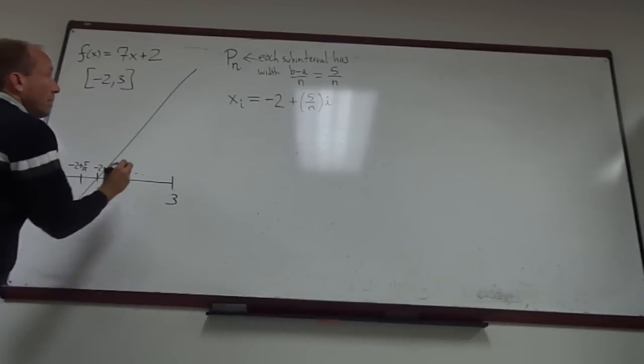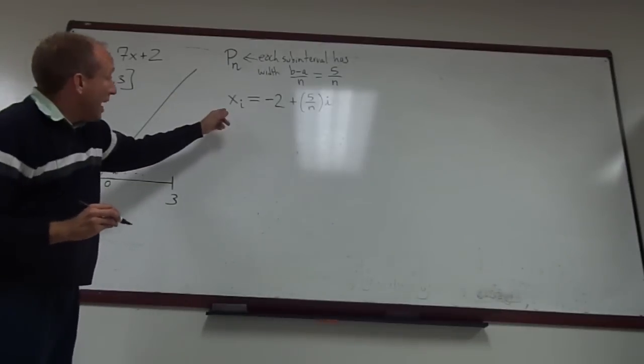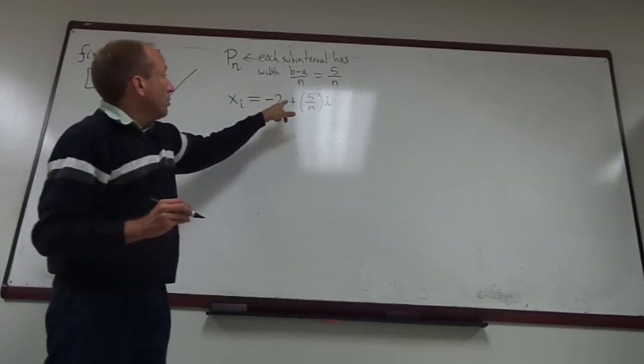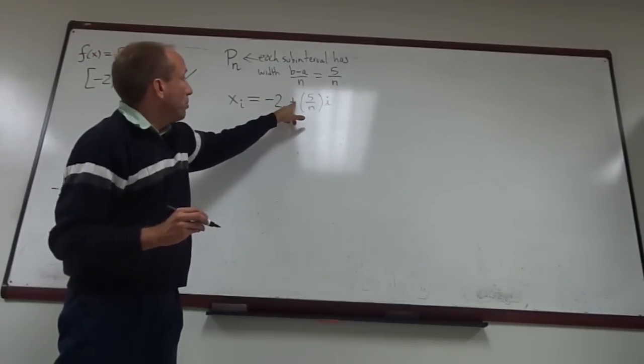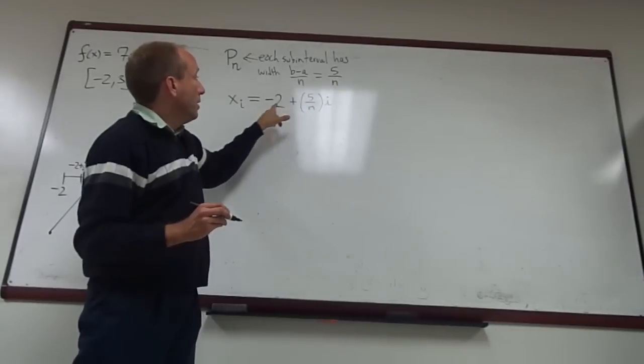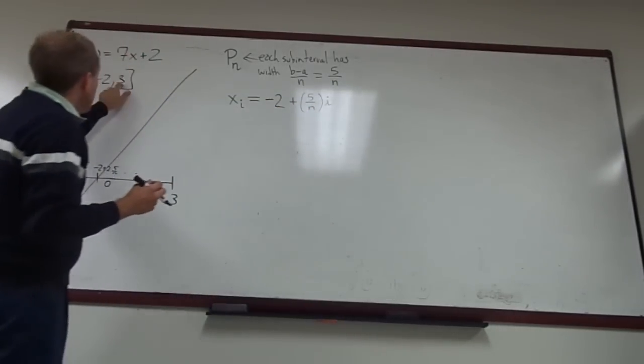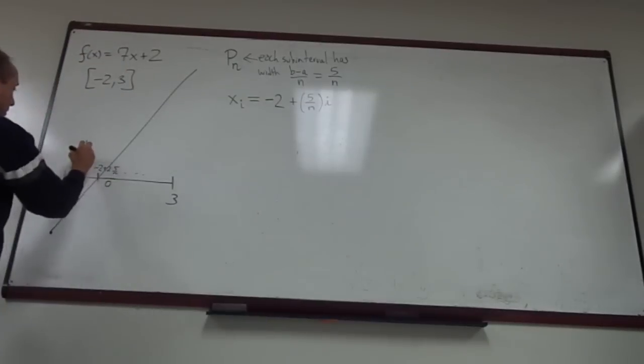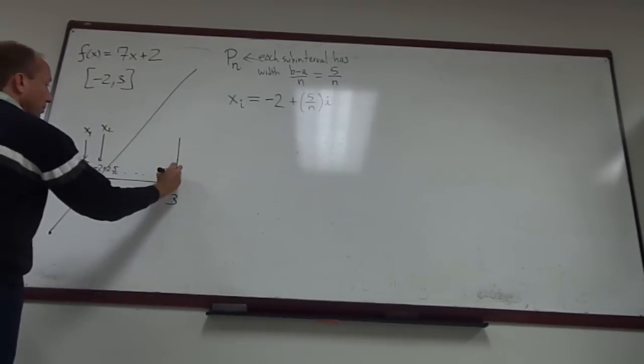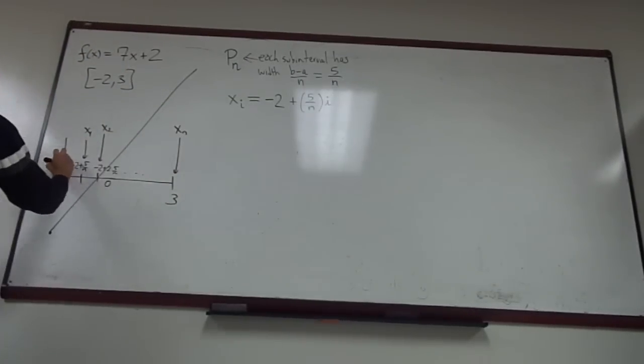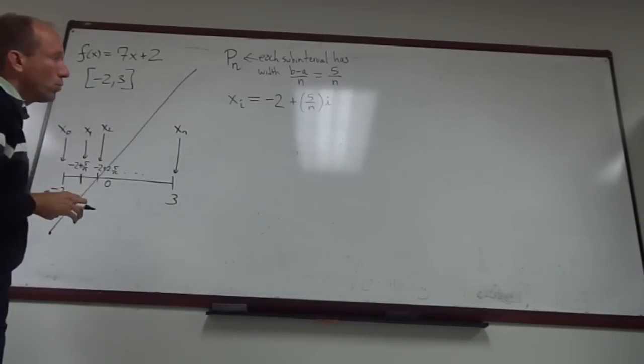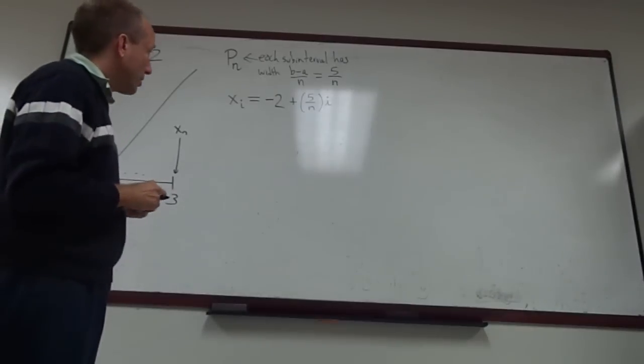The nth term, which is the last term in this partition, x sub n, you'll notice that's just negative 2 plus 5 over n times n, which equals negative 2 plus 5, which is 3, which is the right-hand endpoint of this subinterval. So basically this is x1, this is x2, all the way over to xn. And of course negative 2 is really x0.